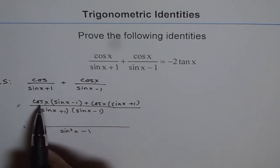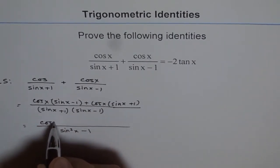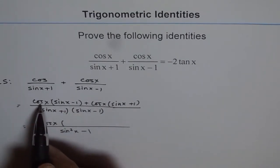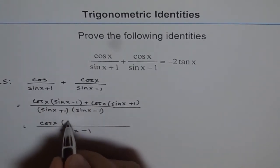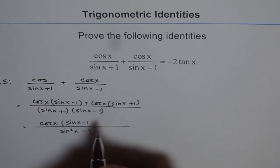Here we can take cos x common. We can factor out cos x and then we get sin x minus 1 from here, plus sin x plus 1 from there.